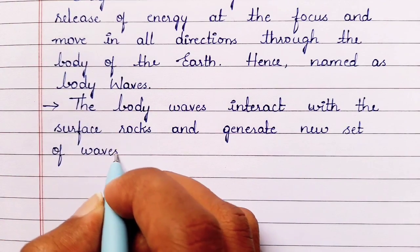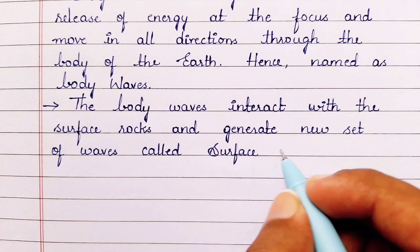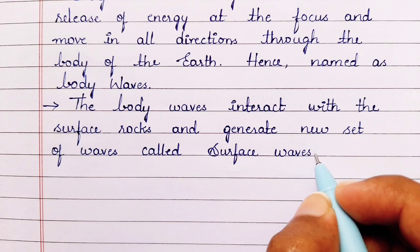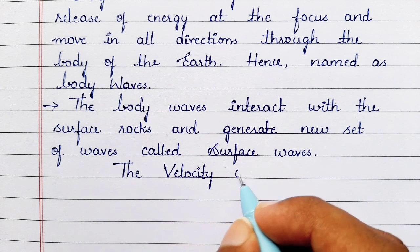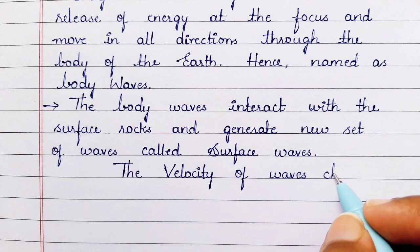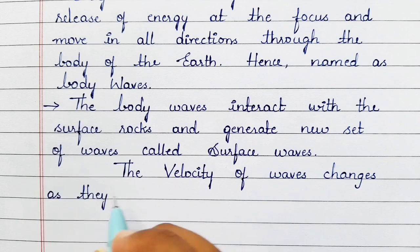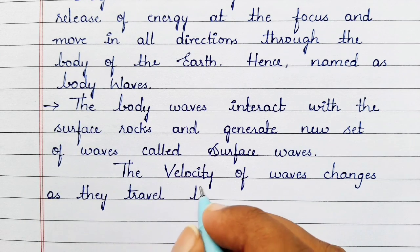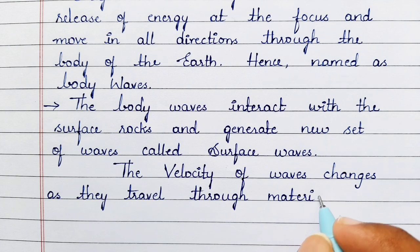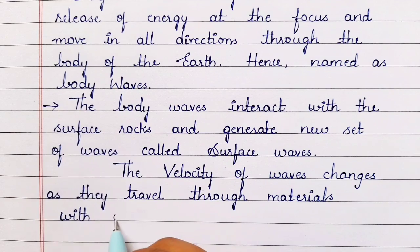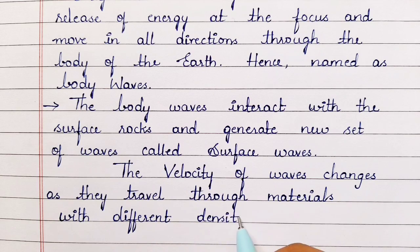The body waves interact with the surface rocks and generate a new set of waves called surface waves. The velocity of waves changes as they travel through different materials with different densities.